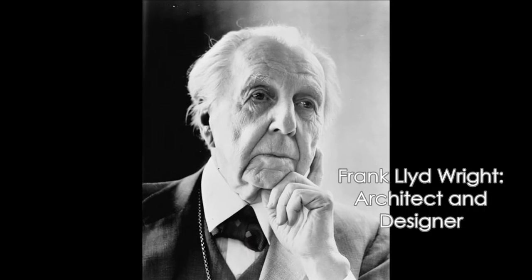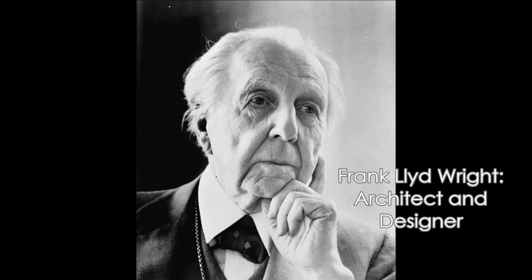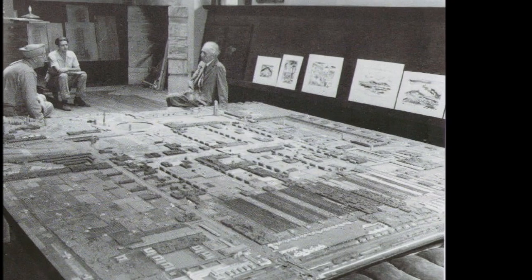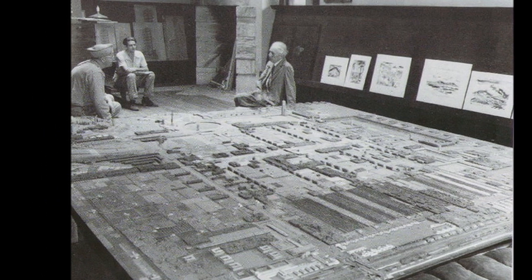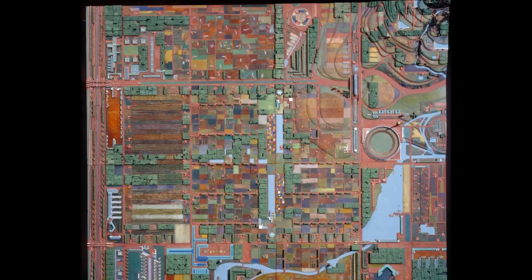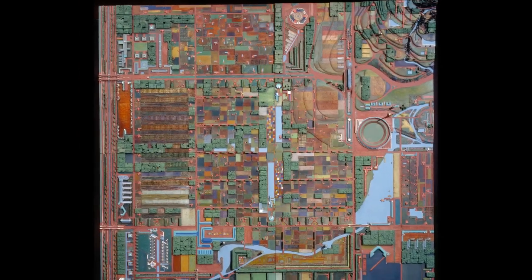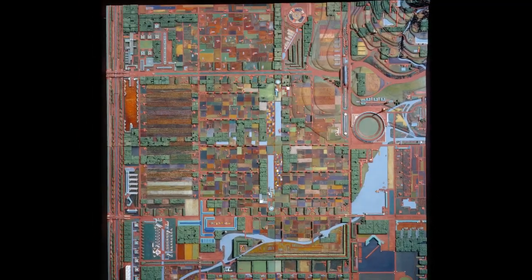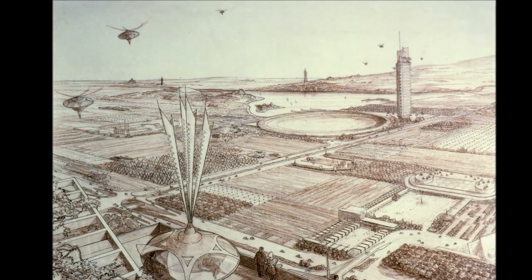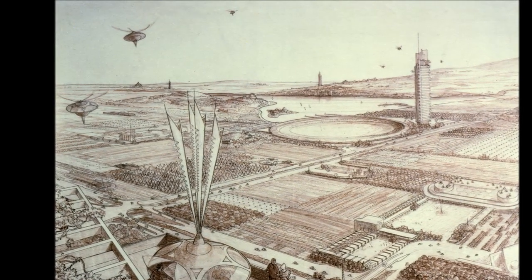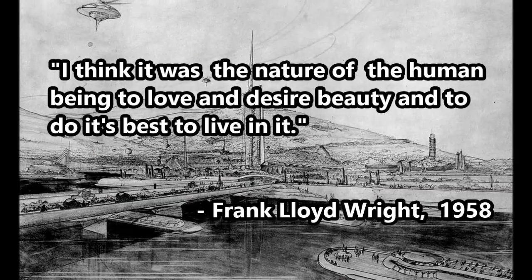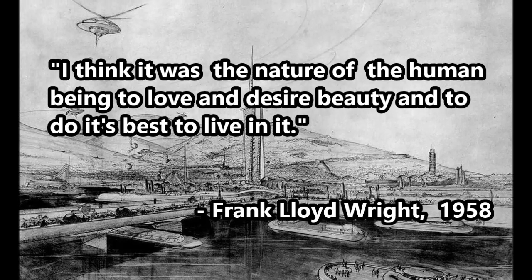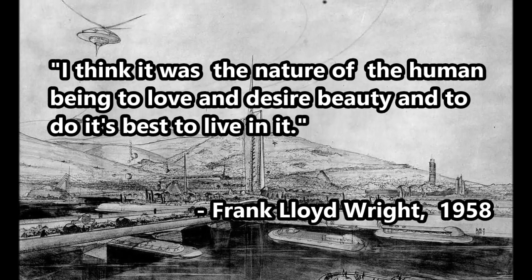Architect Frank Lloyd Wright conceptualized an idea he called Broadacre City. This concept developed from Wright's belief that people should have as much land as they need. Communities within Broadacre City would be spread out, heavily relying on decentralization — meaning residents would grow their own food and goods would be manufactured in small factories. He felt it was the nature of the human being to love and desire beauty and to do its best to live in it.